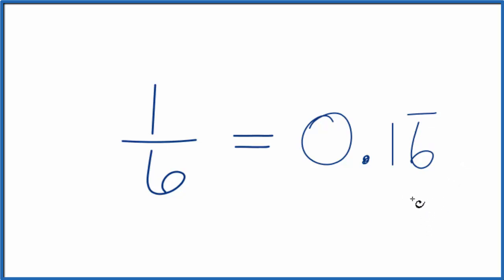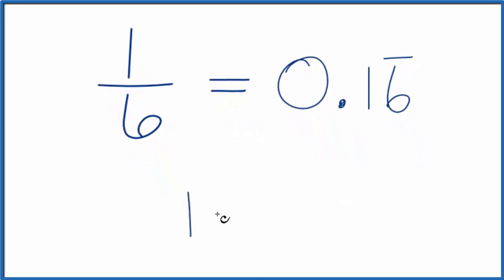We could also divide this longhand to figure out what we have as our decimal. Essentially what we're doing, we're taking 1 and we're dividing it by 6. We want to know what the decimal is. Let's do it longhand.